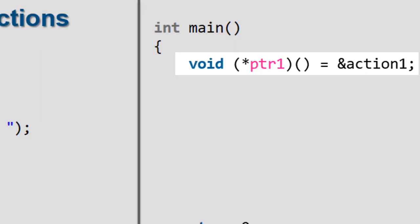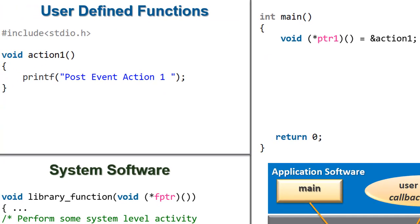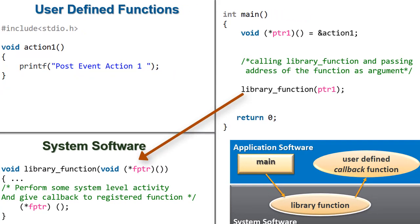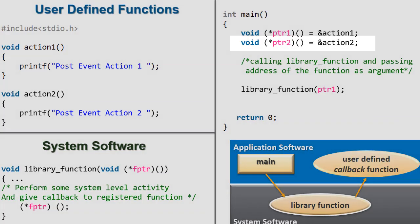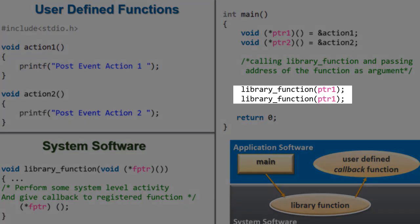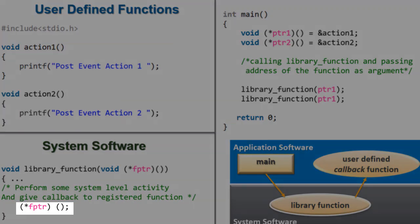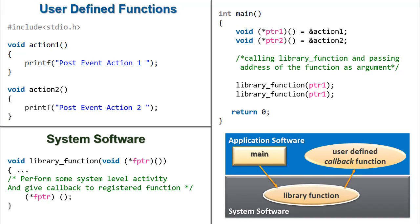Now, from the main function, let us create function pointer pointing to the user defined function, action 1, and then make a system call to the library function. Now, if we want to register any other function, say action 2, then that can be done in a very similar way. The callback will be resolved at runtime. Thus, the polymorphic behavior is achieved using function pointer.